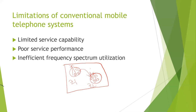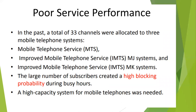Moving to poor service performance — in the past, a total of 33 channels were allocated to three mobile systems. Those three systems are MTS, the IMTS-MJ system, and the IMTS-MKS system. MTS operates around 40 MHz, and MJ operates around 150 MHz; both together provide 11 channels. MKS operates at 450 MHz and provides 12 channels, so altogether they provide 33 channels.